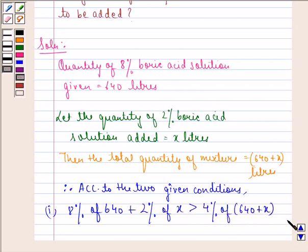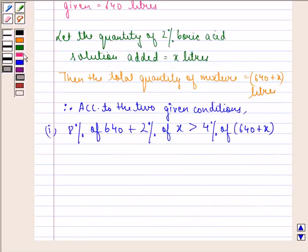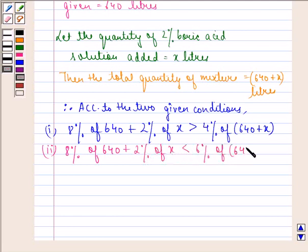Now the first inequality is 8% of 640 plus 2% of x is strictly greater than 4% of 640 plus x.